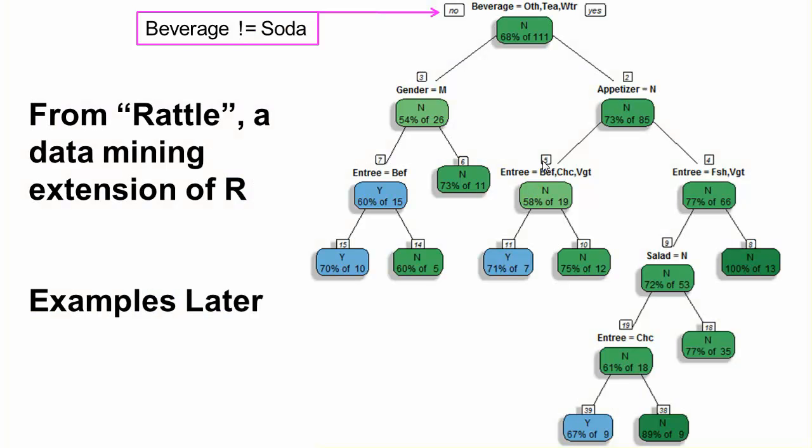This is from a tool called RATTLE — a data mining extension of R, which we'll look at more closely later. It starts out with beverage equals other, tea, or water, which is the same as beverage not equal to soda. This is the complete decision tree for who's getting dessert, though trees are limited in depth — we'll talk more about that later.